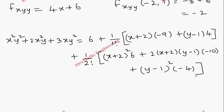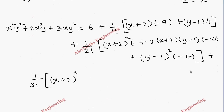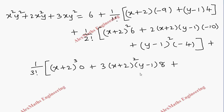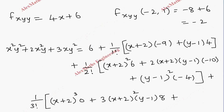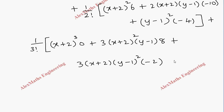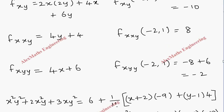Continuing the substitution for the third-degree terms: plus (1/3!)[(x+2)³·0 + 3(x+2)²(y-1)·8 + 3(x+2)(y-1)²·(-2) + (y-1)³·0]. The fxxx and fyyy terms are zero, so they vanish.